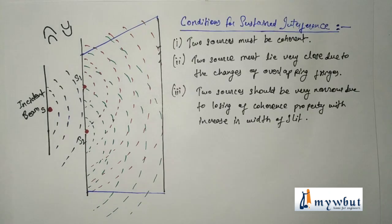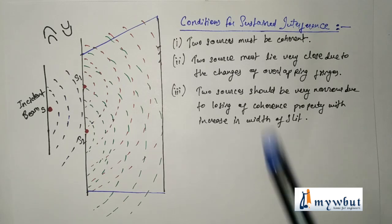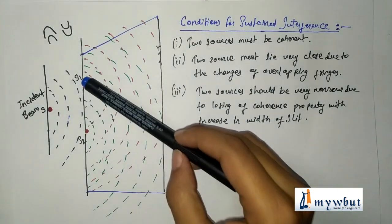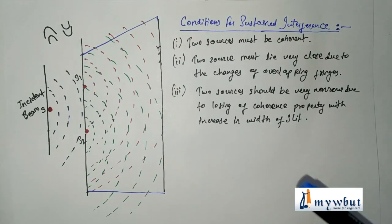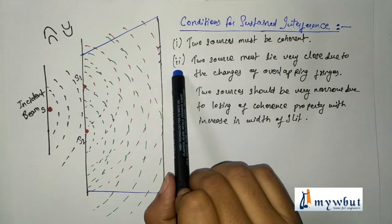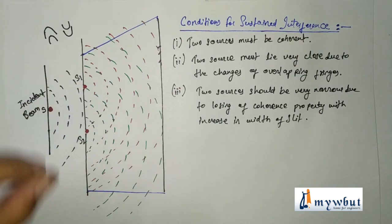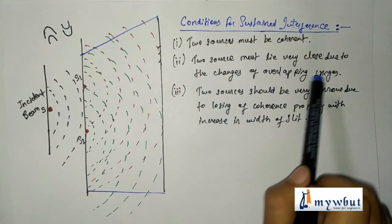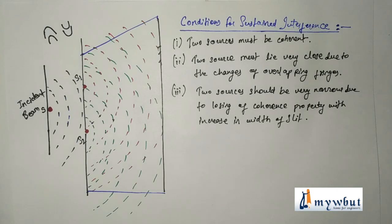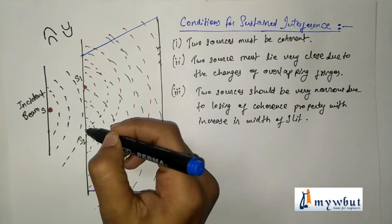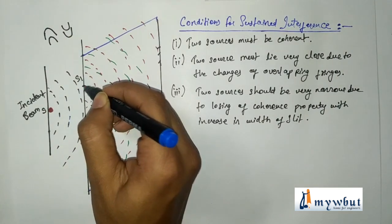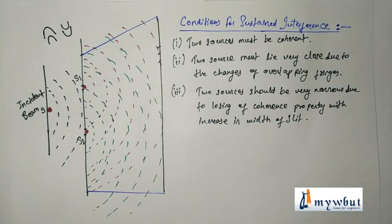Here are the conditions for sustained or permanent interference. First, the two sources must be coherent — these sources are formed by wavefront division. Second, the two sources must lie very close to each other, because the distance must be very small to allow overlapping fringes. Third, the two sources should be very narrow, since increasing the slit width causes loss of the coherence property.